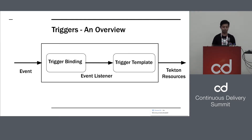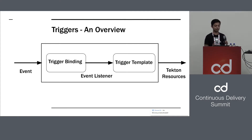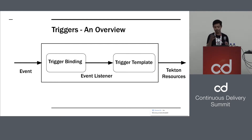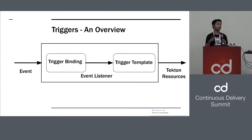So how does that actually look in practice? You have events that come in. We have an event listener pod that's listening for events. Once an event comes in, we extract things out, and we inject those extracted values into a trigger template. Out comes a Tekton resource — like your task runs and pipeline runs. All of this is Kubernetes native, so you can just write some YAML and do a kubectl apply, and it should all work.